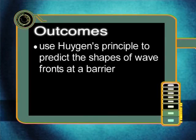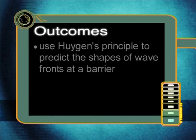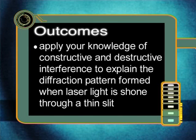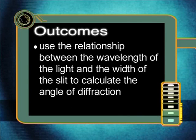By the end of this lesson, you should be able to use Huygens Principle to predict the shapes of wave fronts at a barrier, apply your knowledge of constructive and destructive interference to explain the diffraction pattern formed when laser light is shone through a thin slit, and use the relationship between the wavelength of the light and the width of the slit to calculate the angle of diffraction.